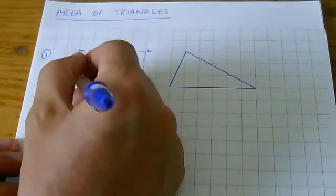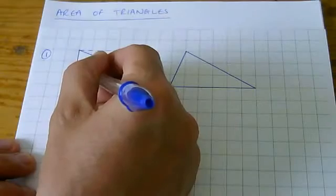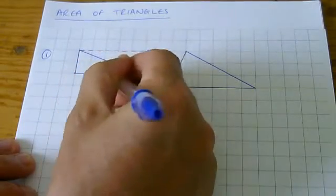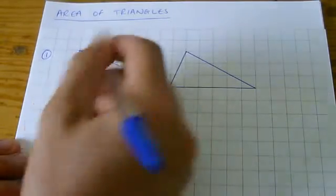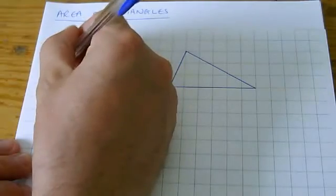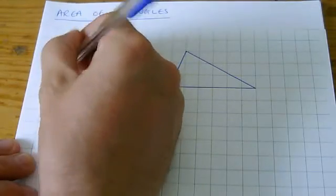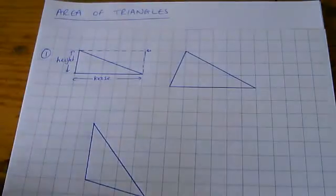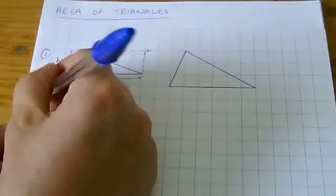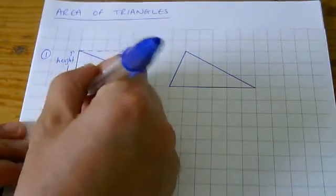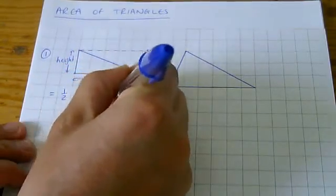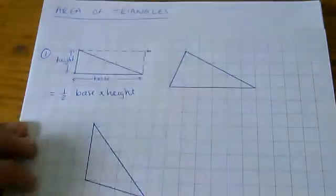Now, the way mathematicians tend to state the formula for the area of a triangle is to say you do half of the base times the height. So, a mathematician would write down half base times height, like that.